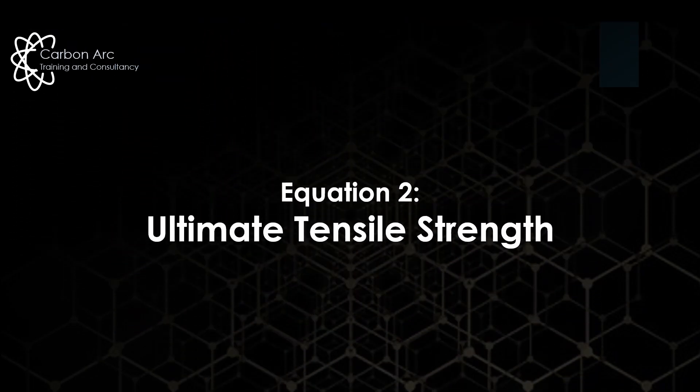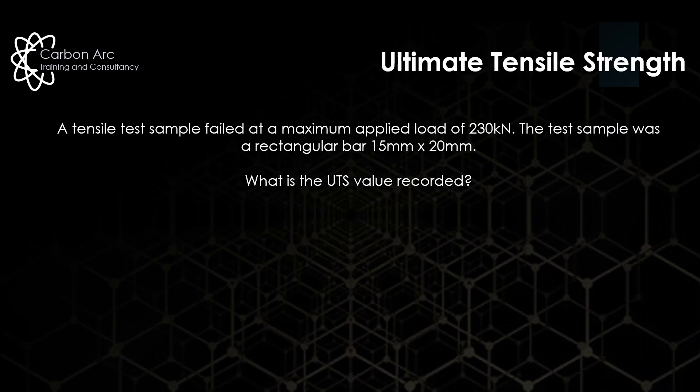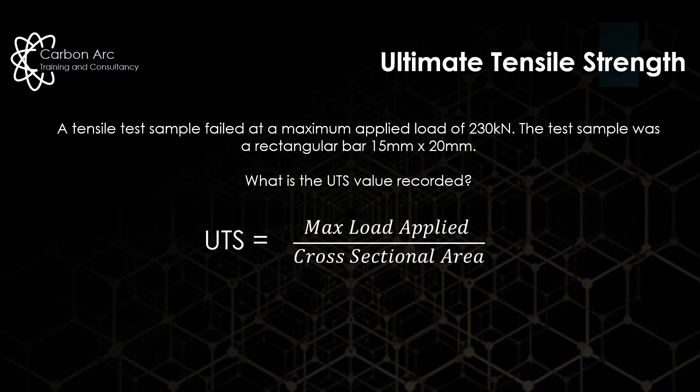The next one is slightly more complicated — here's our Ultimate Tensile Strength. An example question would be: a tensile test failed at a maximum applied load of 230 kilonewtons; the test sample was a rectangular bar of 15 mm × 20 mm — what is the UTS value recorded? We're given all the information, but there are some little tricks with the numbers. Our equation is the maximum load applied divided by our cross-sectional area.